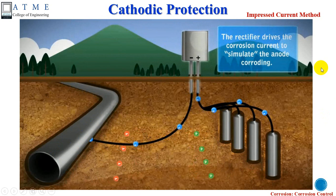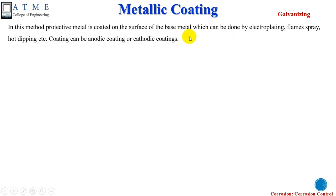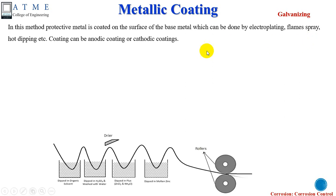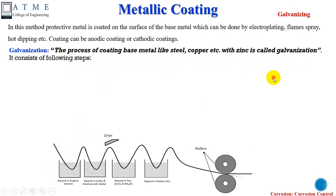Let us move on to the last topic: metallic coating. Metallic coating is a process of coating a base material with the help of another metal in order to prevent it from corrosion. It can be done by electroplating, flame spray, or hot dipping methods. In the new syllabus, galvanization — a hot dipping method — is covered. Galvanization is a process of coating a base material such as steel, copper, or iron with zinc to prevent corrosion. The galvanization process involves the following steps.